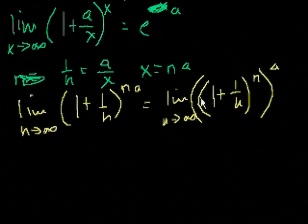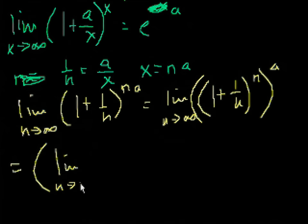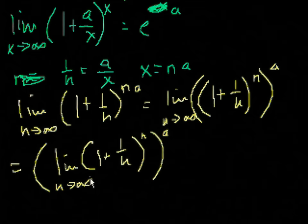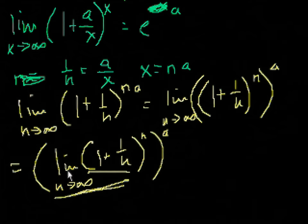And since there's no n out here, we can just take the limit of this and then take that to the a power. So that's going to be equal to the limit as n approaches infinity of 1 plus 1 over n to the nth power, all of that to the a. And this is our definition, or one of the ways to get to e. If you watch the videos on compound interest and all of that, this is how we got to e. And if you try it on your calculator, just try larger and larger n's here, and you'll get e.